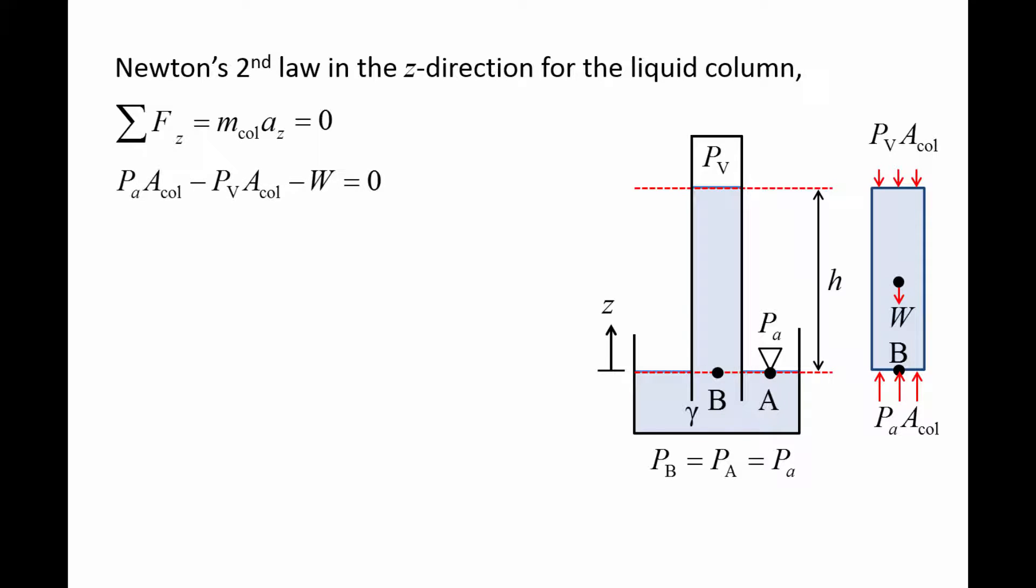Newton's second law becomes the atmospheric pressure, PA, times A col, minus the vapor pressure, PV, times A col, minus the weight, W. The weight is equal to the mass of the column times the gravitational acceleration, g, and mass is equal to the liquid density times the volume of the column. And the volume of the column is equal to the column height, H, times the column's cross-sectional area, A col.